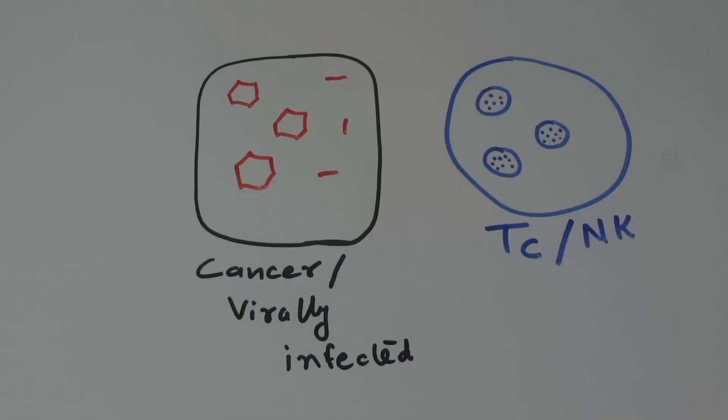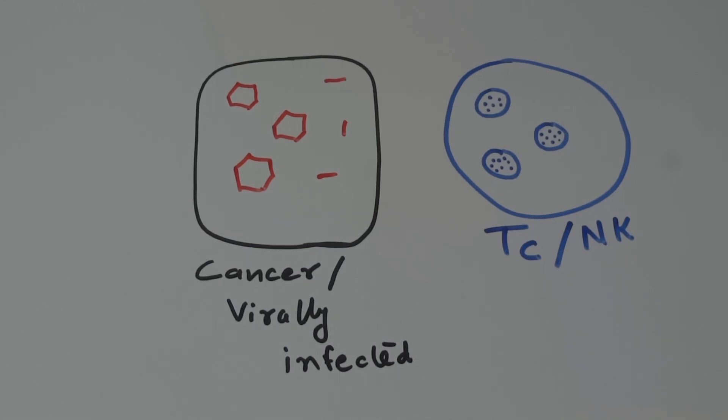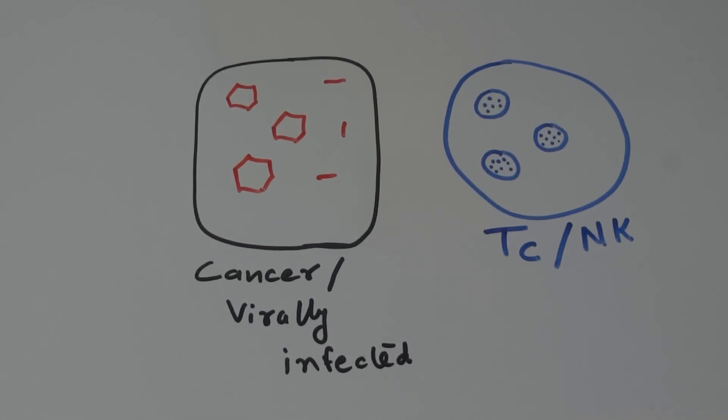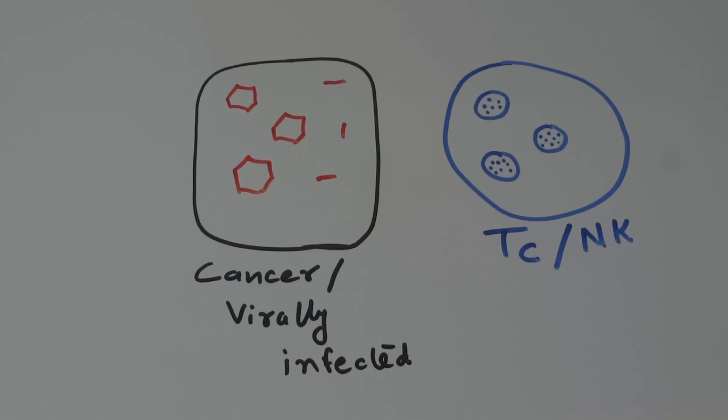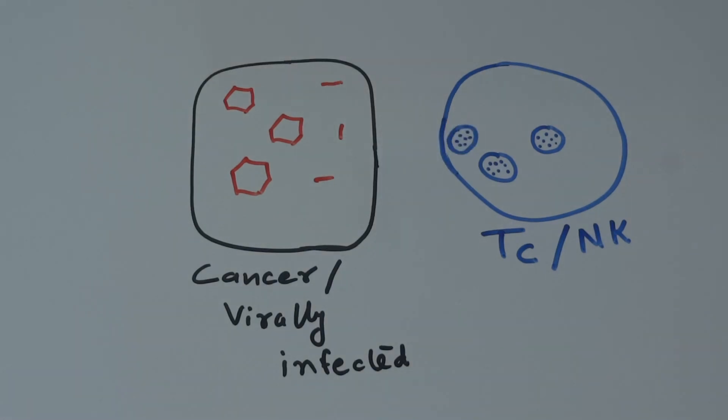As a result, the target cell will be killed. Essentially, the TC cell or NK cell, once it recognizes the cancer cell or virally infected cell, is going to be activated. As a result, the exocytosis of the granules takes place which contains the monomer perforin.